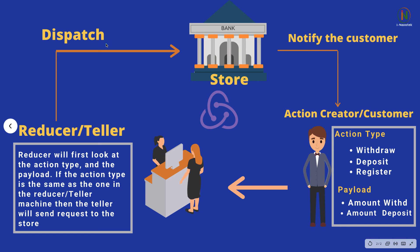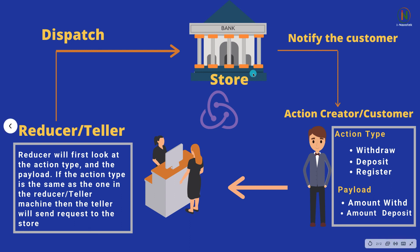Dispatch means you are dispatching the action, and the request goes to the store to make the necessary changes based on the action type. After the action has been taken in the store, it notifies all the components — for example, that this man initially had one thousand dollars in his account and after a withdrawal now has one dollar. This causes a change in all the components.